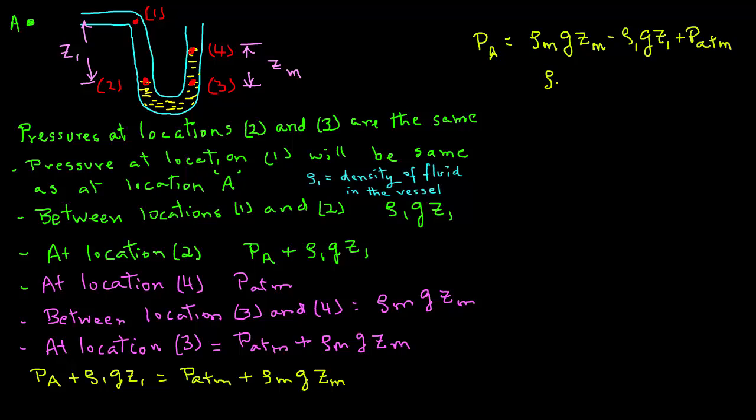Observing that the density of the manometer fluid, often mercury, is much higher than the fluid in the vessel, the quantity ρ1gz1 will be much smaller than ρmgZm. So our equation simplifies to Pa equals ρmgZm plus Patm.